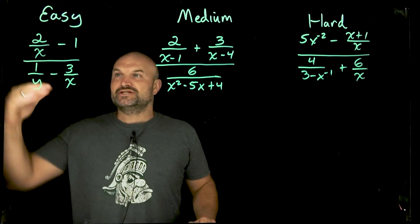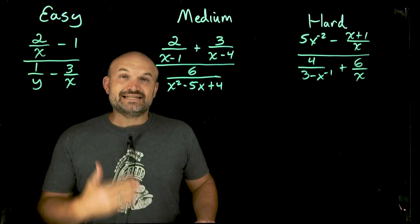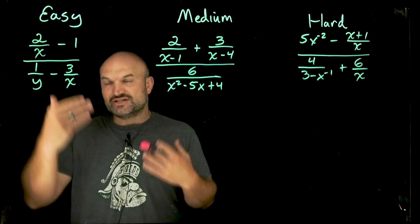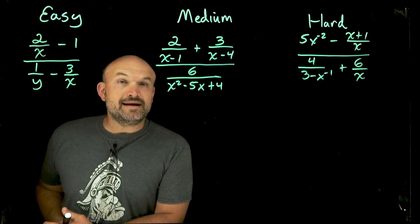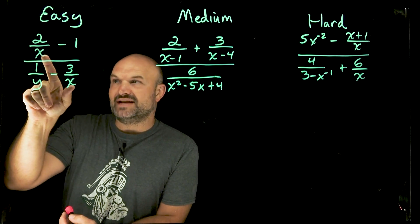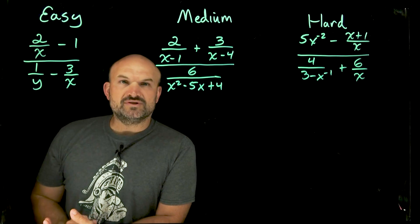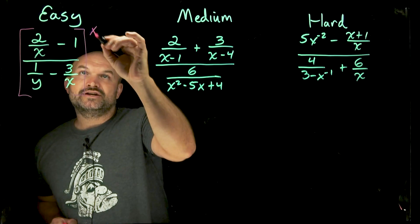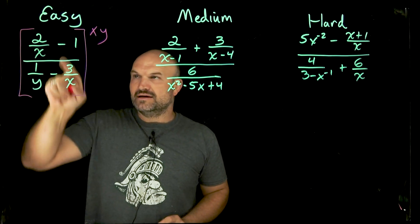A complex fraction is basically when we have fractions in the numerator and in the denominator. The one thing I always tell my students is we want to get rid of the fractions. How do we get rid of them? We find something that our denominators evenly divide into — in other words, find the least common denominator, or the least common multiple of your denominators. We're going to look at all these individual fractions. I have an x, a y, and an x, so I need the smallest expression that y and x both divide into.